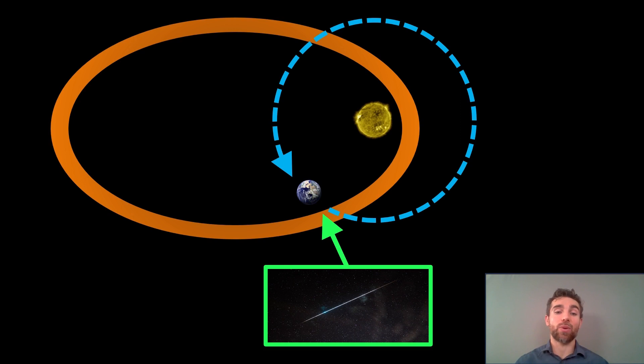It's also why they're going to appear to come from the same part of the sky, because you're going through this path of dust that's in a specific location. So as the Earth moves through that, it's going to appear to come from the same part of the sky. So that's why you get a sudden spike or increase in meteors at that particular part.